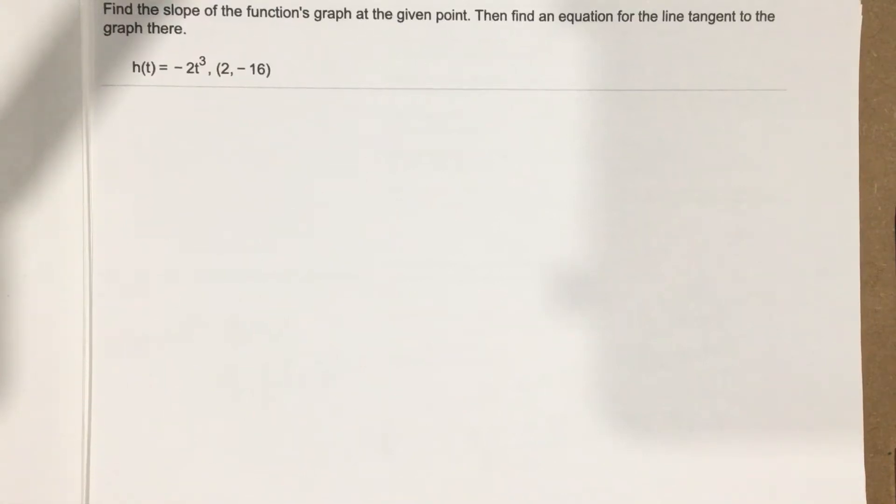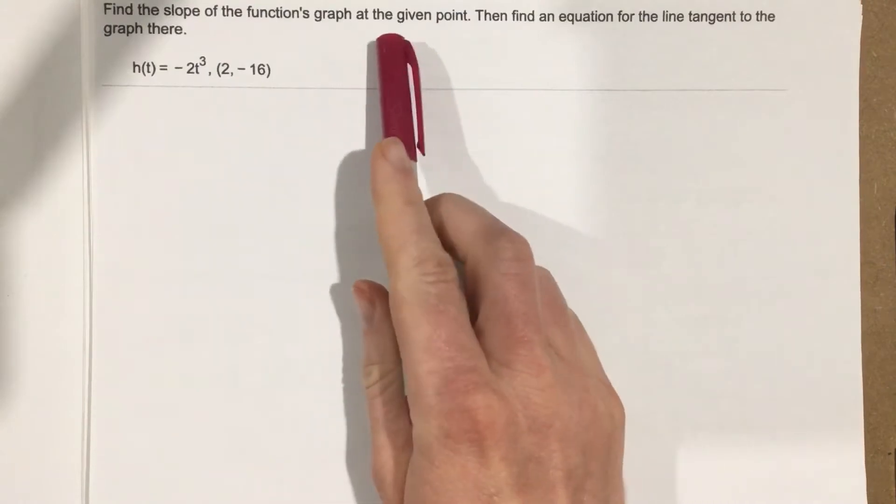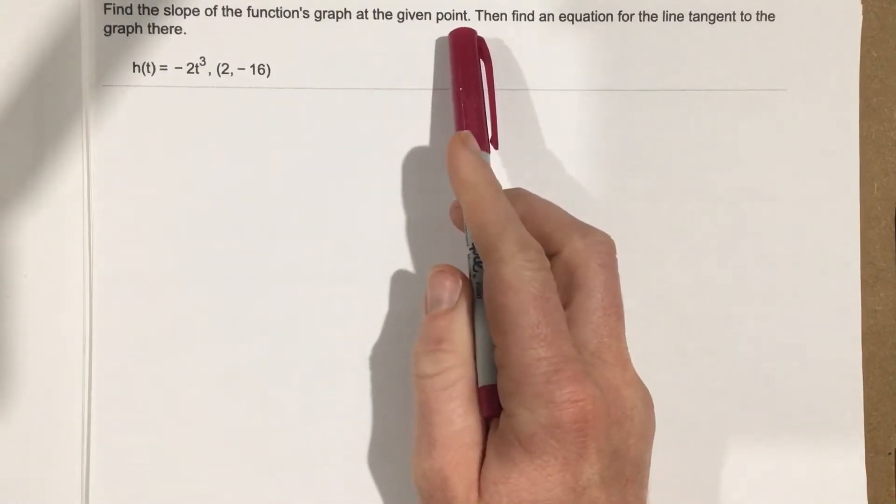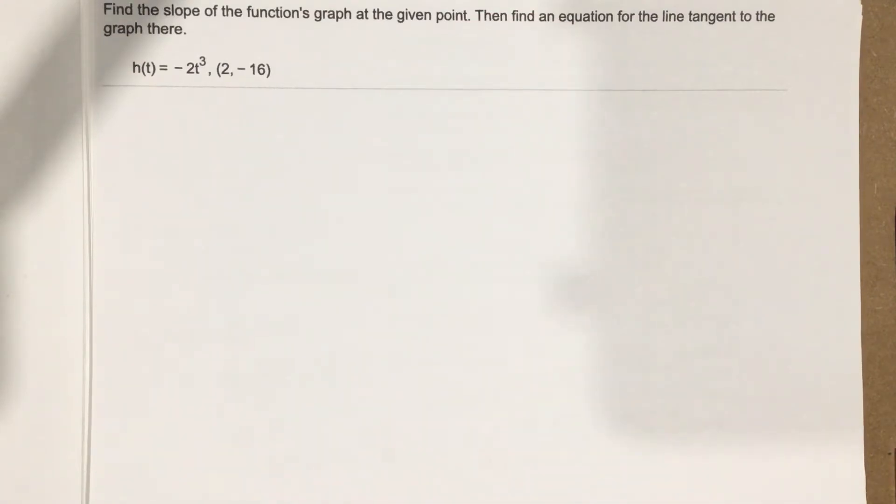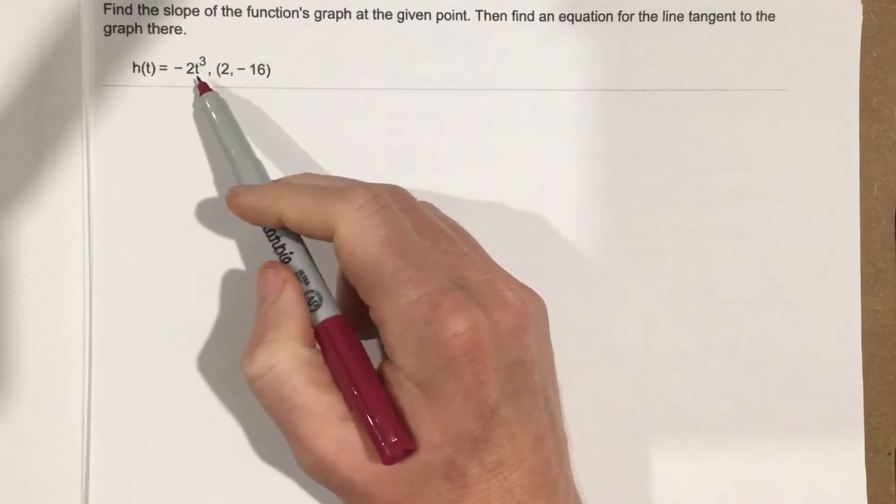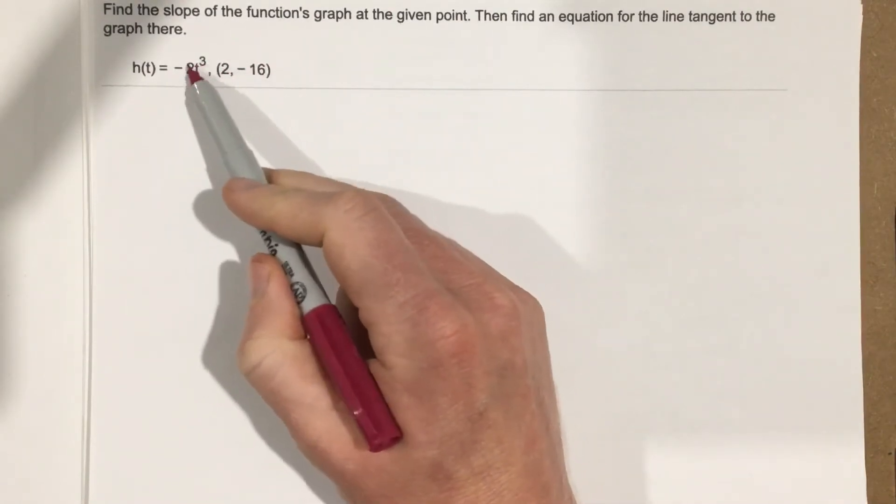This is problem number 5 for section 3.1. In this problem it says, find the slope of the function's graph at the given point, then find an equation for the line tangent to the graph there. So we want to start by finding the slope, then we want to find the line that's tangent to this function at this point.